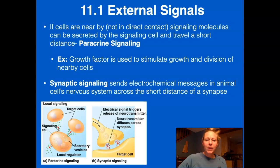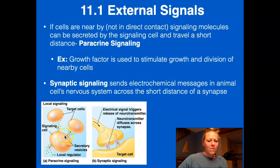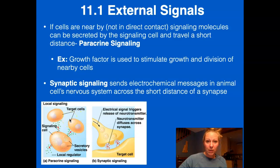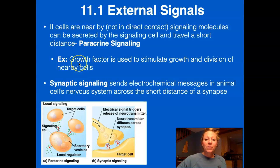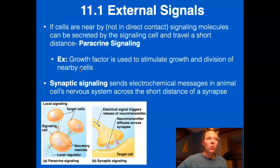If cells are nearby but not in direct contact, you'll have paracrine signaling. A secretory vesicle releases some sort of signaling factor that travels a short distance to the target cell, where receptors trigger some sort of change or communication into the target cell. An example of paracrine signaling is growth factor, which is used to stimulate growth and division in nearby cells. We'll talk more about growth factor when discussing cell division.